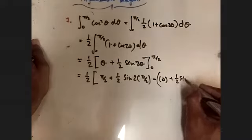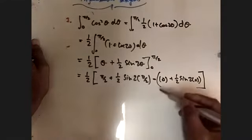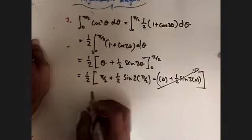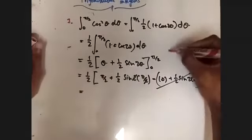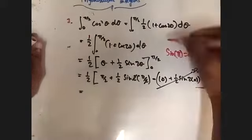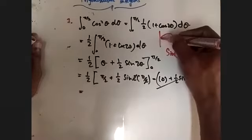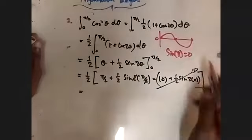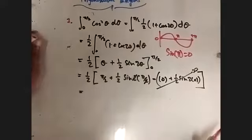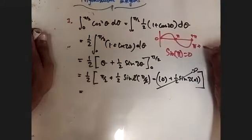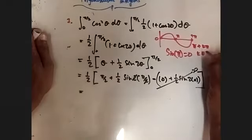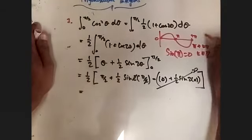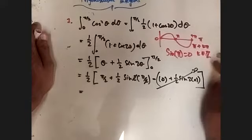Now we need to do the part at 0: 0 plus one-half sine of 2 times 0. Do you agree that this whole term becomes 0 because sine of 0 is 0? This becomes sine of π, and sine of π equals 0 as well. We've got three points where sine is 0: at 0, at π, and at 2π — that is, at every k·π where k is an integer.